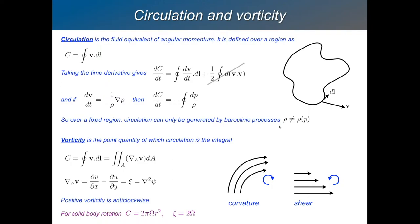Circulation is only generated if rho changes as you change p. If rho is a function of p everywhere, then this is just the integral of a constant around the boundary, which will just cancel and come to zero. So you really need rho to vary with respect to p for this integral to be non-zero — you need a situation where rho is not a function of p. That's baroclinic flow. So this term depends on baroclinic flow. You can't generate circulation except through baroclinic processes. In a barotropic flow, you won't have any rate of change of circulation around a given boundary.